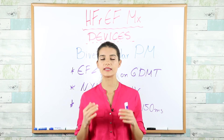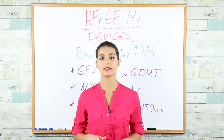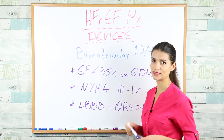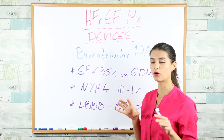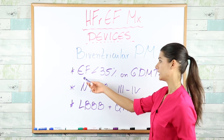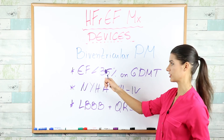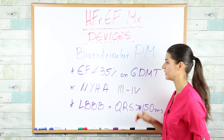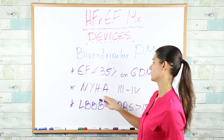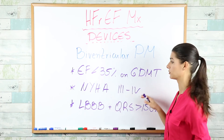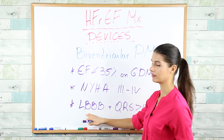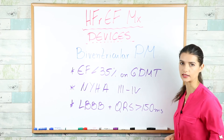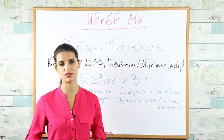If still not improving, implant a biventricular pacemaker (CRT). Criteria: EF less than 35%, on guideline-directed medical therapy, NYHA class 3 or 4, and left bundle branch block with QRS complex greater than 150 milliseconds. If nothing helps, place the patient on the heart transplant list.